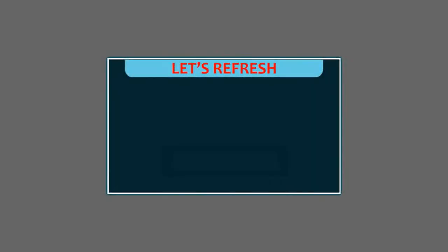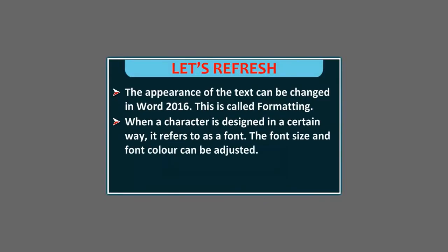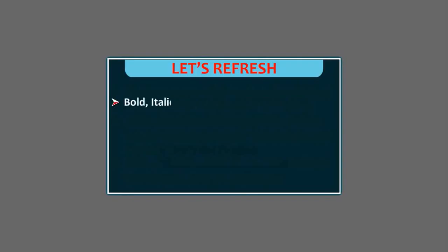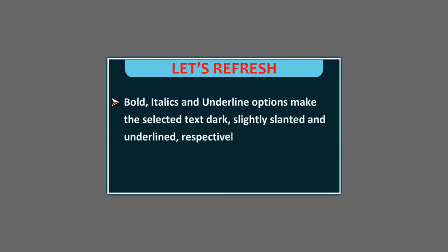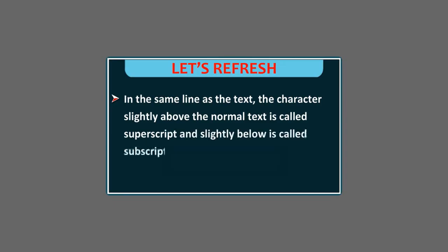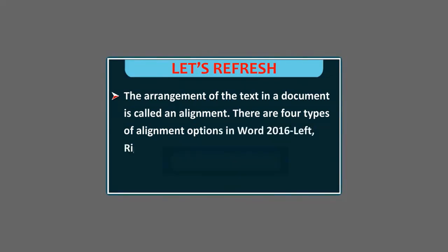Let's refresh. The appearance of the text can be changed in Word 2016; this is called formatting. When a character is designed in a certain way, it refers to as a font. The font size and font color can be adjusted. MS Word also allows us to add text effects like shadow, glow and reflection. Bold, italics and underline options make the selected text dark, slightly slanted and underlined respectively. The character slightly above the normal text is called superscript and slightly below is called subscript. The arrangement of the text in a document is called an alignment. There are four types of alignment options in Word 2016: left, right, center and justified.